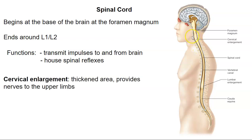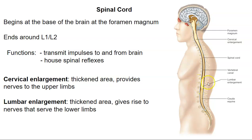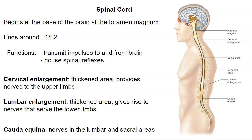There's a cervical enlargement up in the neck by the cervical vertebrae that provides nerves to the upper limbs. And then there's a lumbar enlargement — another thickened area — that gives rise to the nerves of the lower limbs. And then lastly we have the cauda equina, Latin for 'horsetail' — those are the spinal nerves that come out of the lumbar and sacral area.